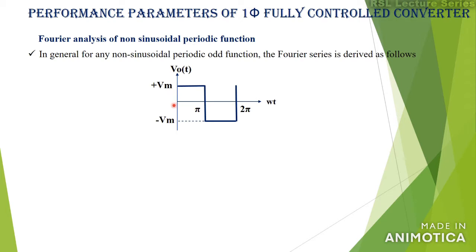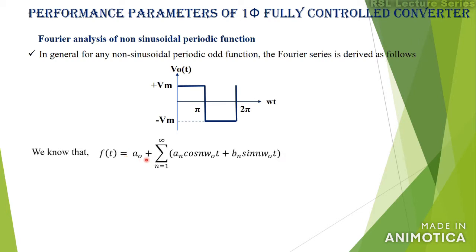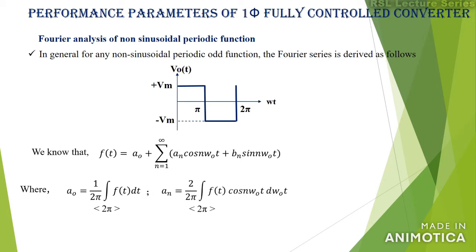I've taken a non-sinusoidal periodic function V₀ of t. In general, the Fourier series is given by f(t) = a₀ + summation from n=1 to infinity of aₙ cos(nω₀t) + bₙ sin(nω₀t), where a₀ is given by (1/2π) integral of f(t) dt, and aₙ is given by (2/2π) integral of f(t) cos(nω₀t) d(ω₀t).